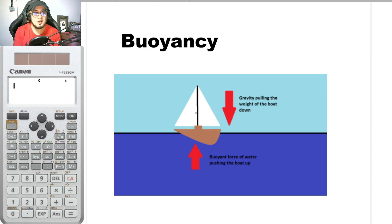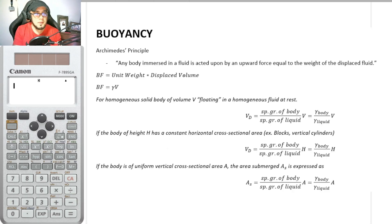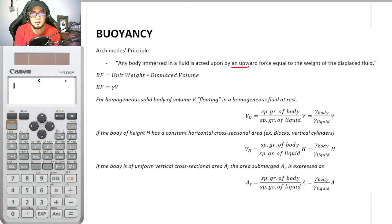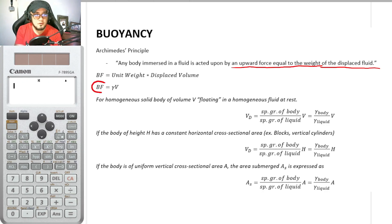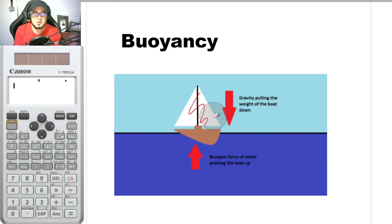According to Archimedes' principle, any body immersed in a fluid is acted upon by an upward force equal to the weight of the displaced fluid. Mathematically, buoyant force BF is equal to gamma times V, where gamma is the unit weight and V is the displaced volume.